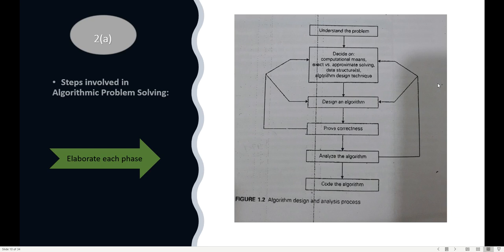Now let's look into the essay answers. The first question asks about algorithmic problem solving. You need to be thorough with the given flowchart. The first step is to understand the problem — what the actual problem is and how to approach it. Next, you decide on computational means such as exact versus approximate solving. For example, finding the root of a quadratic or cubic equation gives only an approximate answer — those are called approximate algorithms.